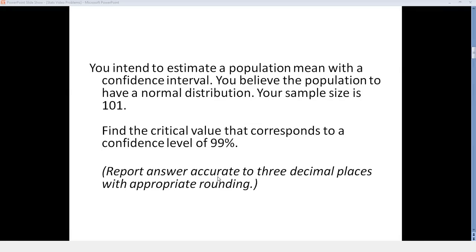You intend to estimate a population mean with a confidence interval. You believe the population to have a normal distribution. Your sample size is 101. Find the critical value that corresponds to a confidence level of 99%. Report answer accurate to three decimal places with appropriate rounding.